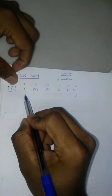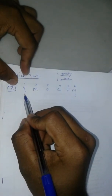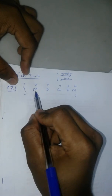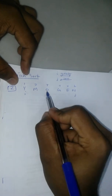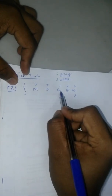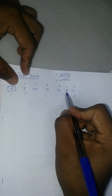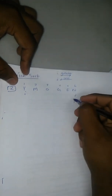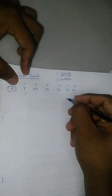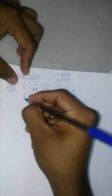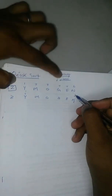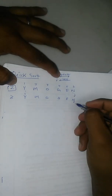Is I greater than the pivot? No — we keep asking: greater than? No, greater than? No — all the way until I ends up over here at the far right. Now J: is J less than the pivot? Yes, it is.